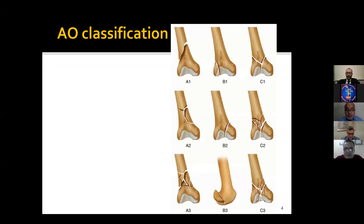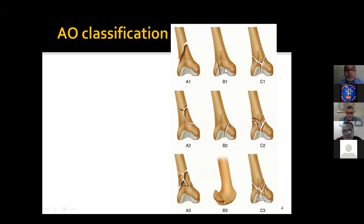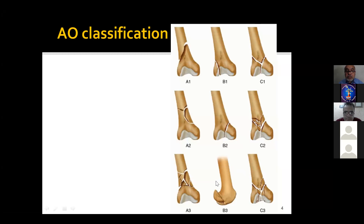We are all aware of AO classification. Type A is extra-articular, type B is partial-articular, and type C is complete-articular. Moving within the same class, we get higher grades of complexity: A1 is simple metaphysial, A2 has a wedge fracture, and A3 is multifragmentary metaphysial. Type B: B1 is a lateral condyle, B2 is the medial condyle, and B3 is a coronal Hoffa-type fracture. C1 is simple-articular simple metaphysial, C2 is simple-articular multifragmentary metaphysial, and C3 is multifragmentary articular and multifragmentary metaphysial.